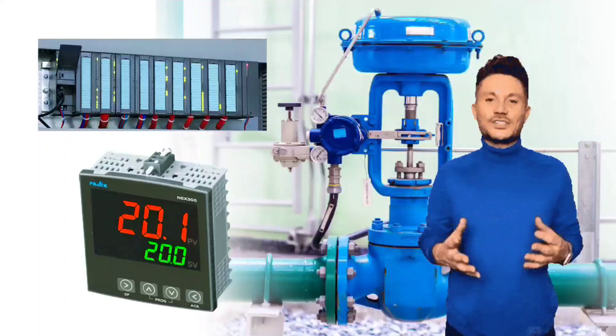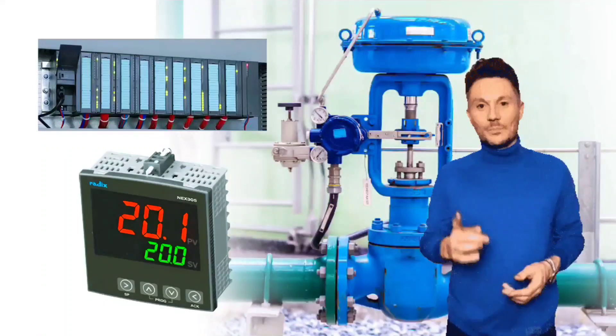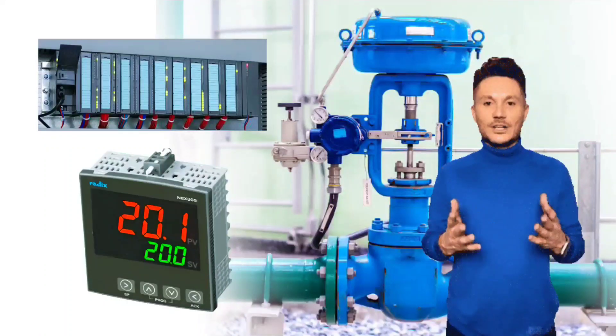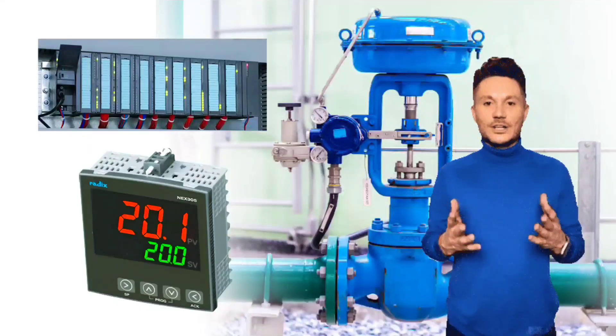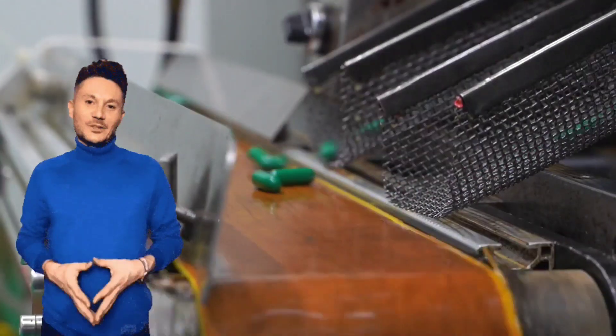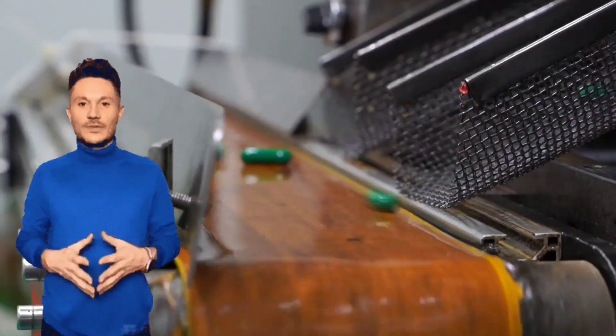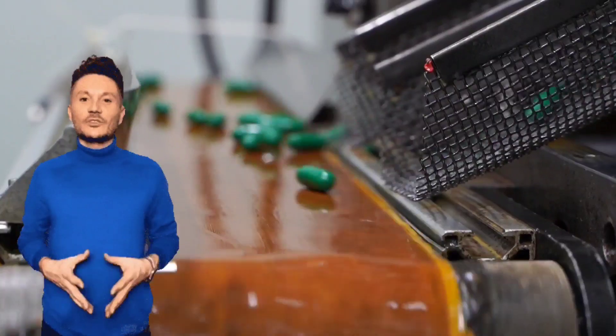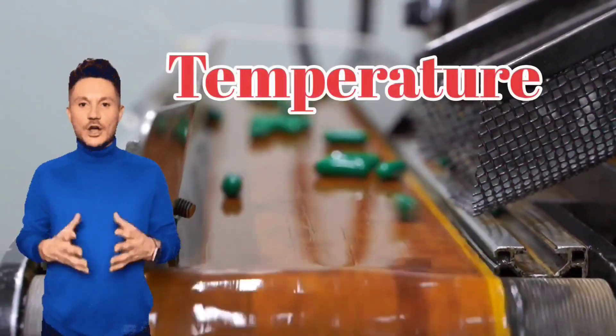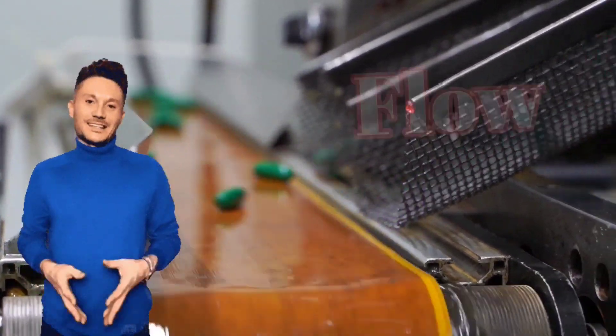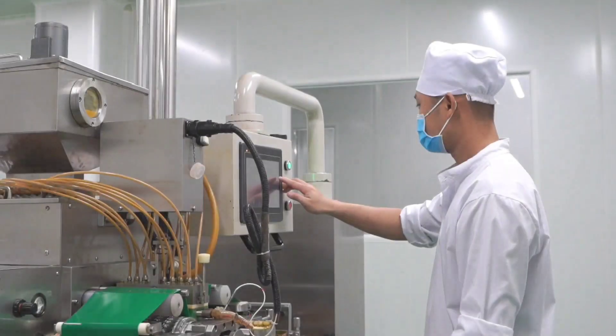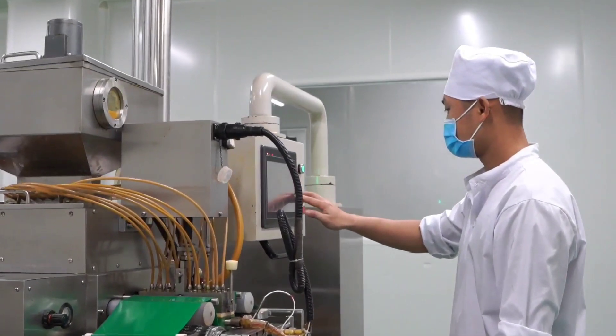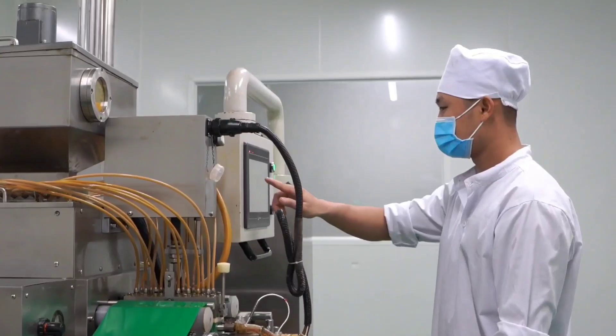Friends, let us understand the process parameters a bit. Process parameters are those parameters which are controlled in a process. Friends, when we do any production or control machinery, various parameters like pressure, temperature, level, flow - these are controlled. Because these parameters have to be controlled, that's why all these are process parameters.